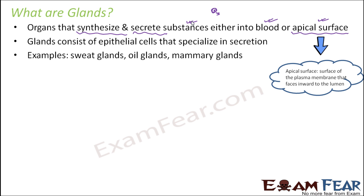What is a sweat gland? Whenever you work hard, do a lot of physical exercise, or it is too hot, you start sweating — you see droplets of water on your skin. From where does this water come? There are organs called sweat glands whose job is to synthesize sweat and secrete it on your body surface. So even though sweat glands are located deep inside your body, the products they produce are seen on the superficial surfaces.